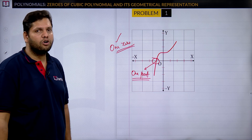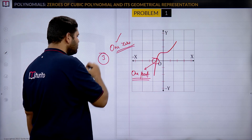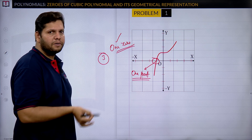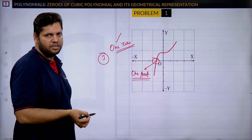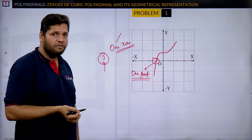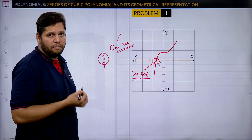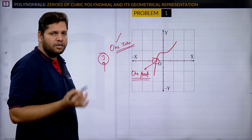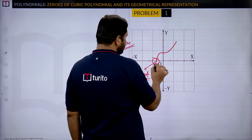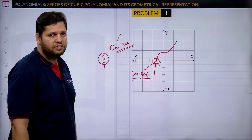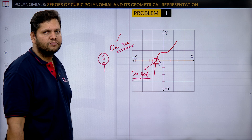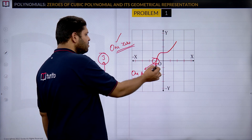If the degree of the polynomial is mentioned as three but the graph has only one intersection point, it does not mean the polynomial has one zero — it has three zeros that are all repeating. Without the degree given, we say the number of zeros equals the number of intersection points visible in the graph.